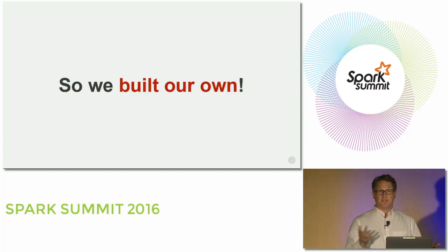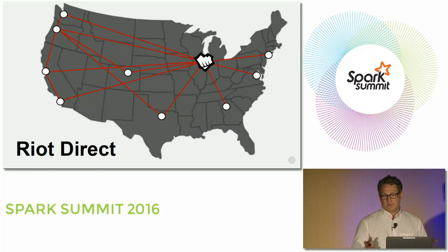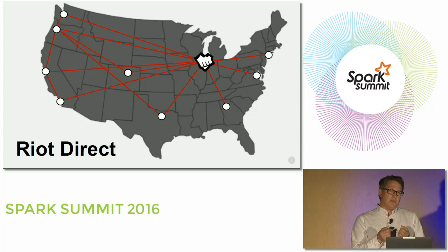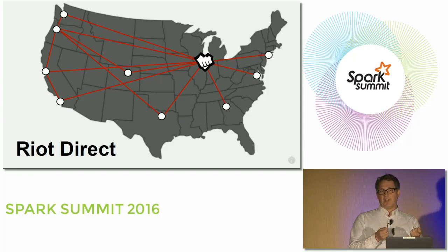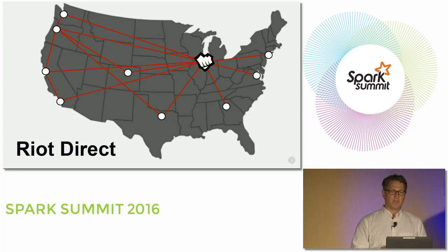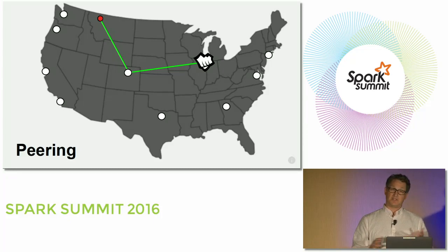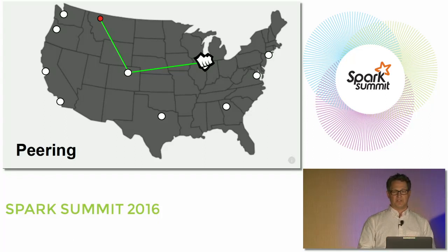To fix that, Riot decided to build their own network. The Riot Direct initiative has built network points of presence all over the world. The idea is that we can peer with your ISP — physically connect a fiber optic cable between our network and theirs, whether it's AT&T, Time Warner, Comcast, or others. By doing that, we have much greater ability to more efficiently route your traffic directly to our game servers. This is a big win for our players, and we know it works — we've done lots of studies and have lots of data showing that it works.